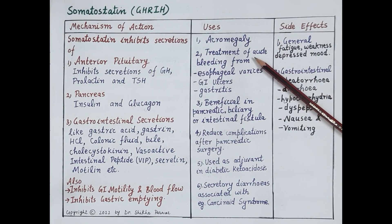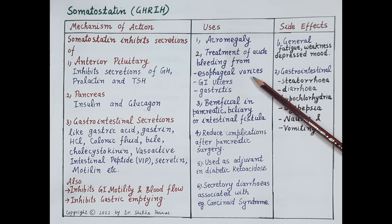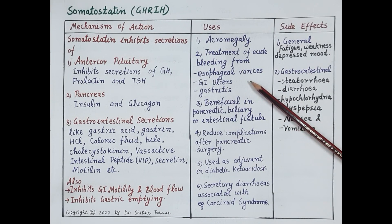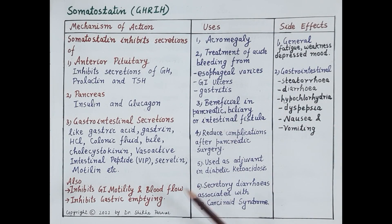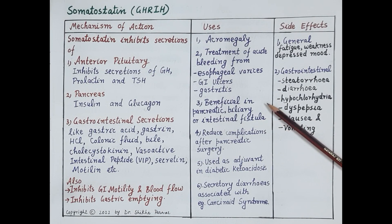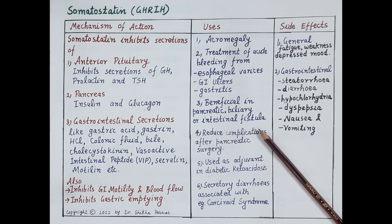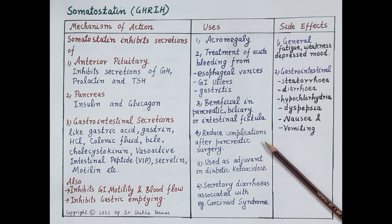Somatostatin can be used in the treatment of acute bleeding from esophageal varices — that is, bleeding from veins in the liver — and in controlling bleeding from gastrointestinal ulcers and gastritis, as it reduces gastrointestinal blood flow. Since somatostatin inhibits almost all gastrointestinal secretions, it is also useful in pancreatic, biliary, and intestinal fistulas, and it reduces complications after pancreatic surgery.